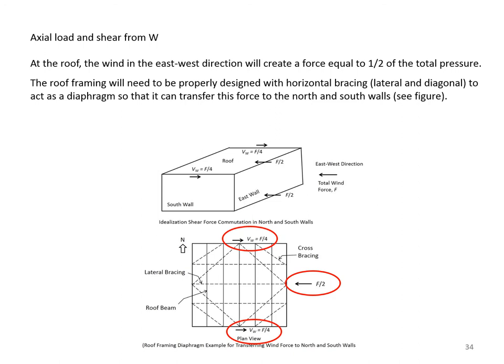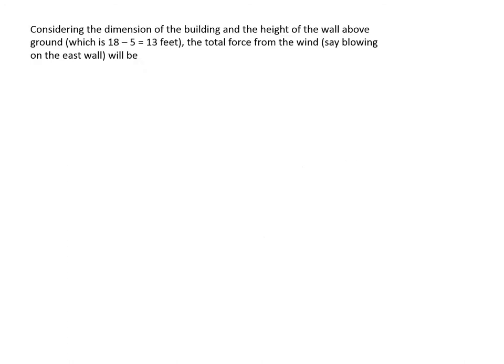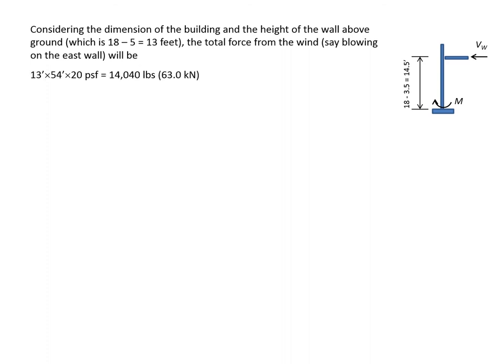So each wall receives F/4 as in-plane shear—approximately one quarter of the total wind pressure in the east-west direction. Considering the wall height above ground (18 − 5 = 13 feet), the total wind force is 13 × 54 × 20 = 14,040 pounds.